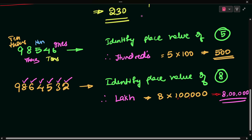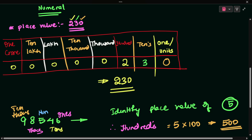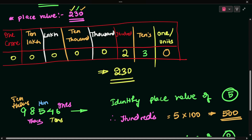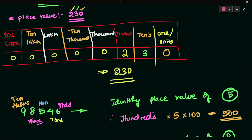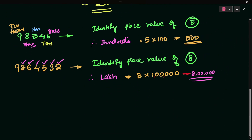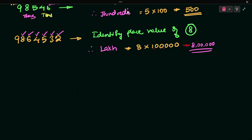So to summarize place value: ones, tens, hundreds, thousands, ten thousands, one lakh, ten lakh, one crore. After one crore comes ten crore, hundred crore. In the foreign system, ten lakh is one million and one crore is ten million, but in the Indian system we only use crores.